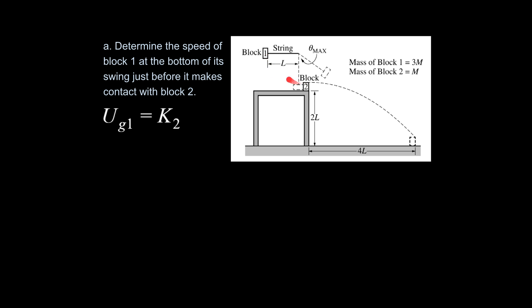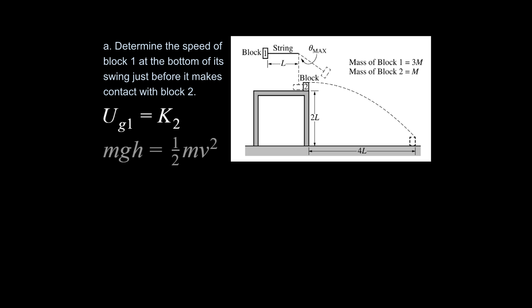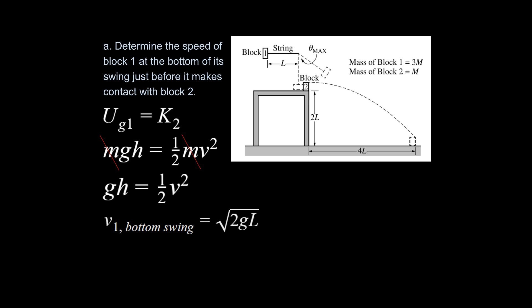The very first thing to notice is that with a swing you have a height difference, and an easy way to deal with height differences is conservation of energy, because height is built into the gravitational potential energy equation. The potential energy stored at the first position is equal to the kinetic energy as it swings down. So mgh equals one-half mv², the m's cancel, and you isolate for speed at the bottom.